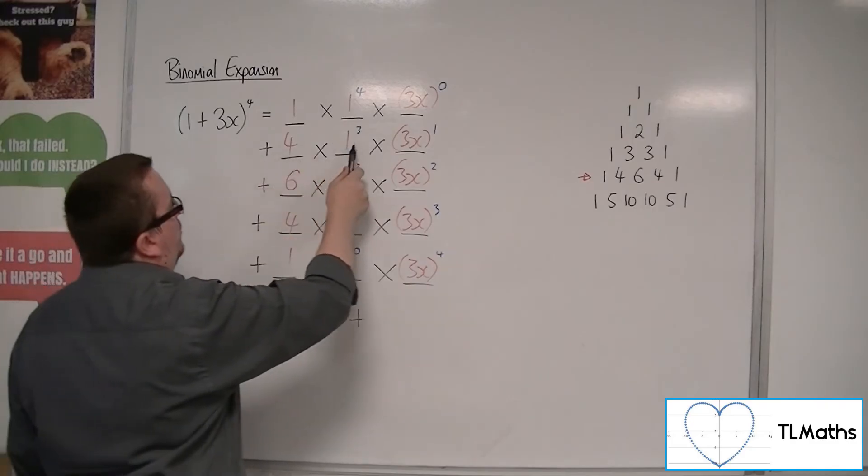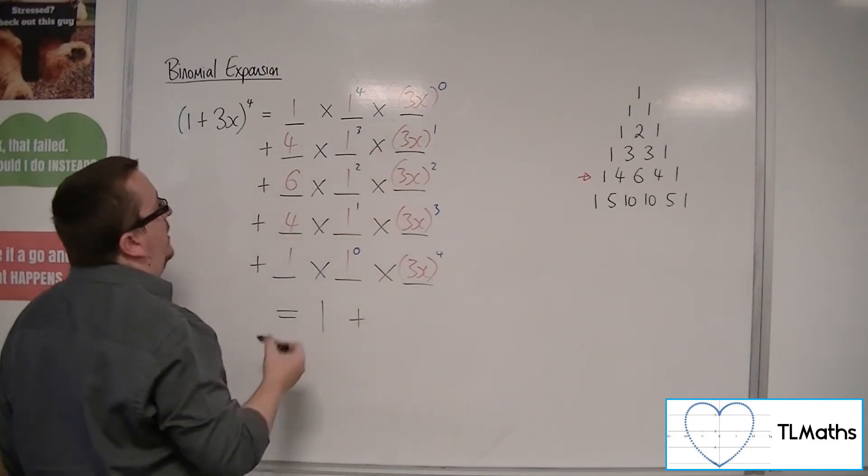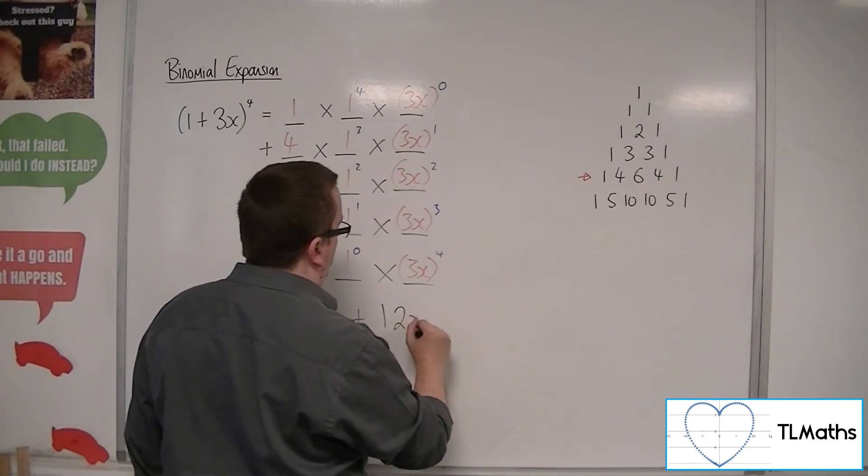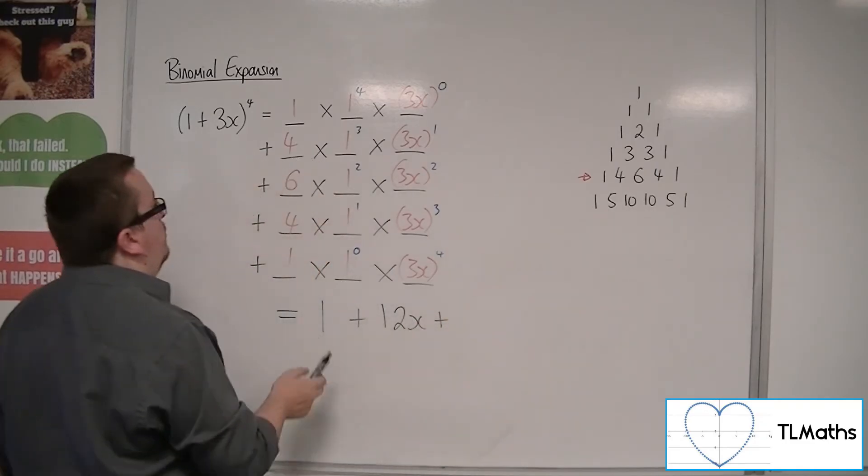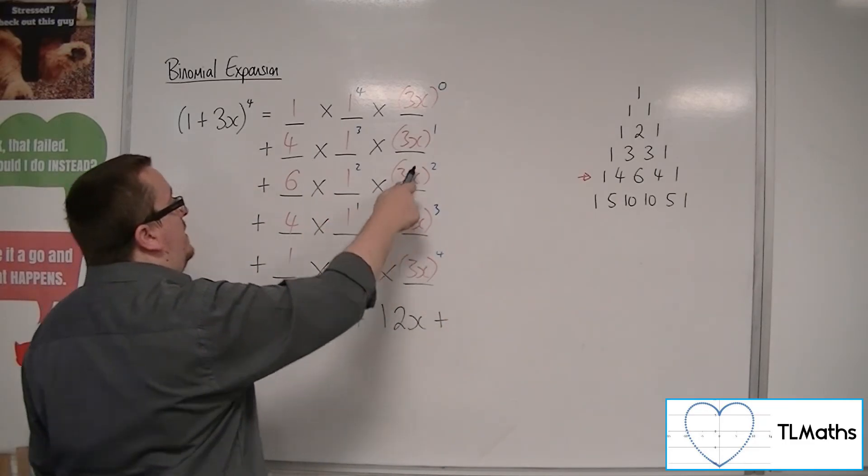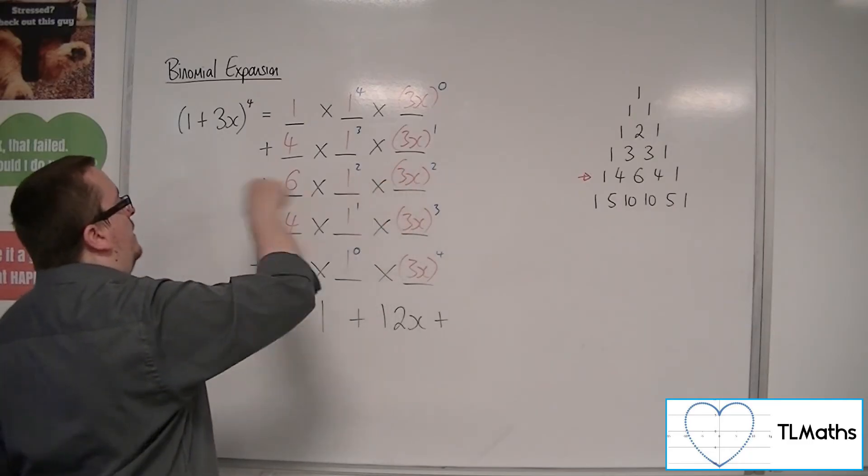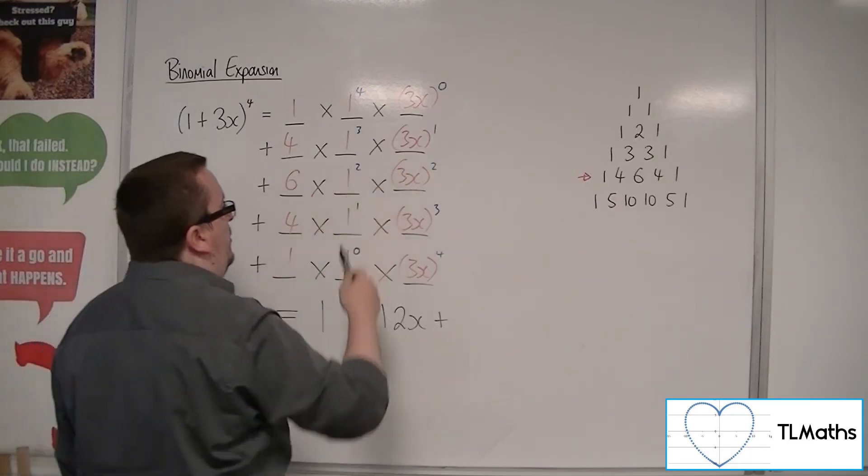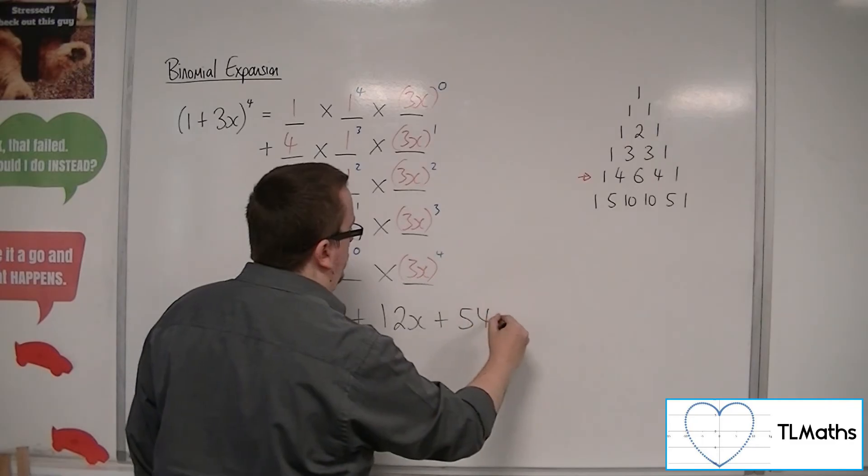Then we've got 4 × 1 × 3x, so that would be 12x. Then we've got 6 × 1 × (3x)^2. Now, (3x)^2 is going to be 9x^2. So 6 × 9 is 54, so 54x^2.